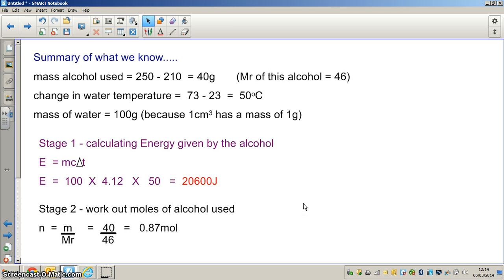This takes us into stage 2 of the calculations, which is to work out the number of moles of alcohol used. We do that by using our general moles formula, which is N number of moles equals mass over the relative molecular mass or molar mass. The mass we have used is 40. It is not the water, the 100, it is now the mass of the fuel or the alcohol used which is 40. So 40 divided by 46 equals 0.87 moles. So we have used 0.87 moles of alcohol to produce this amount of joules of energy.